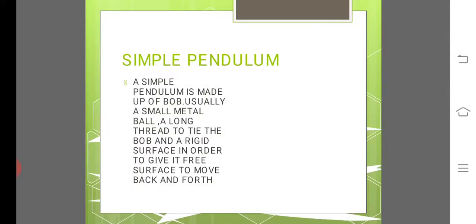Simple pendulum is made up of bob, usually a small metal ball, a long thread to tie the bob and a rigid surface in order to give it free surface to move back and forth.